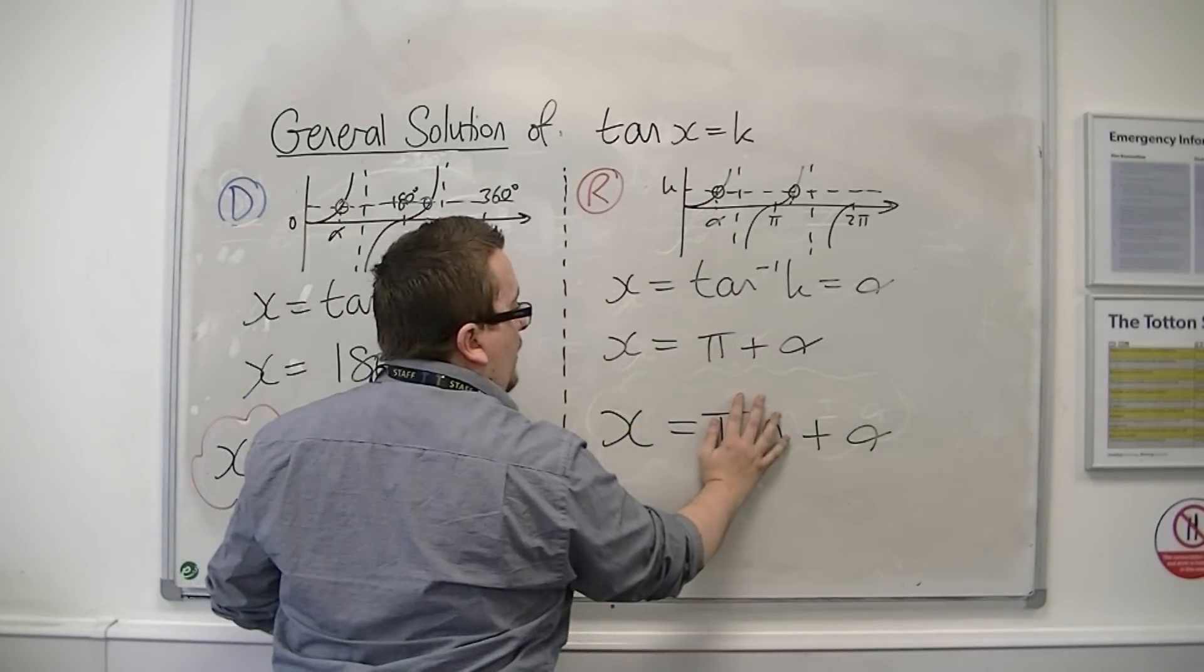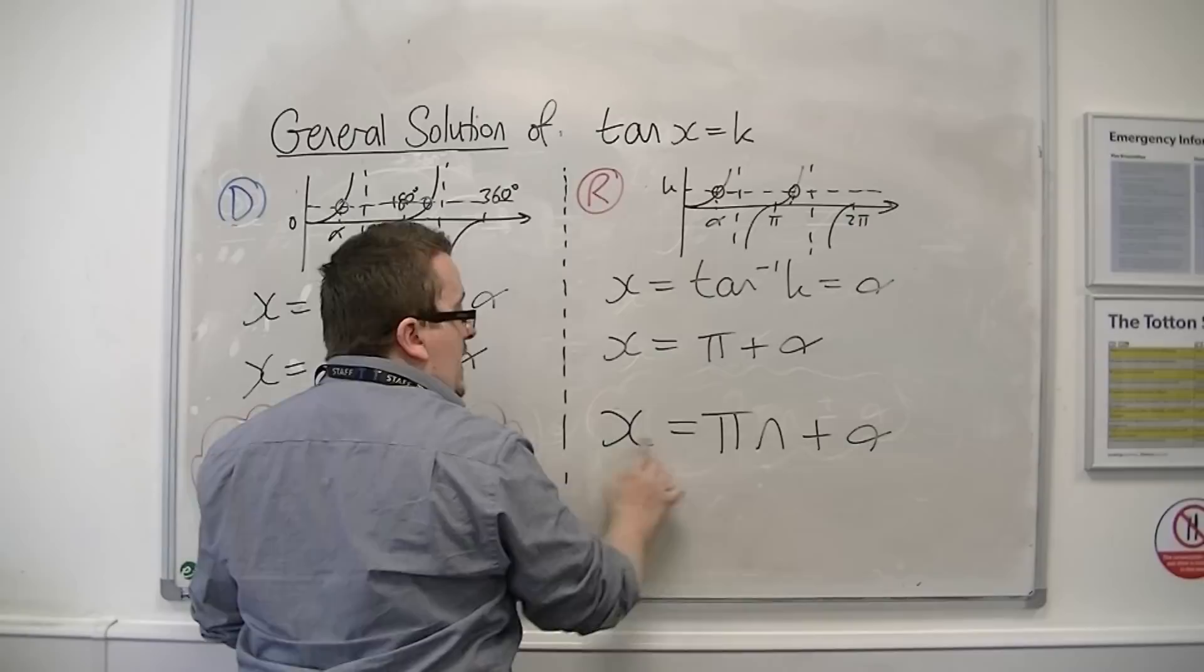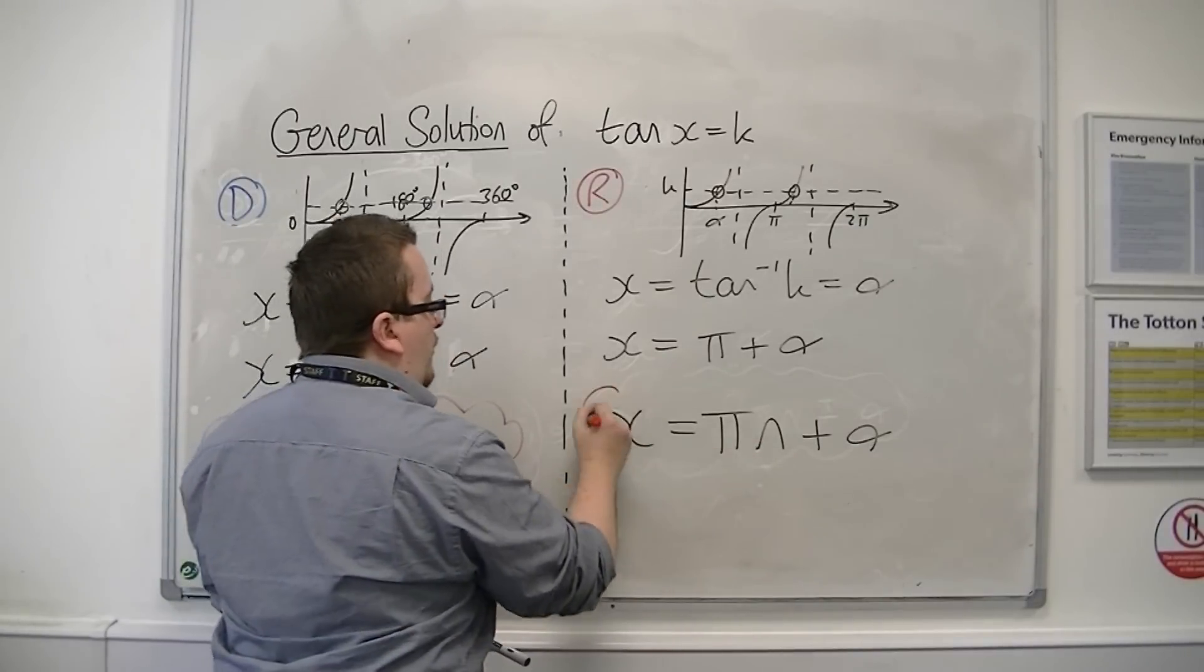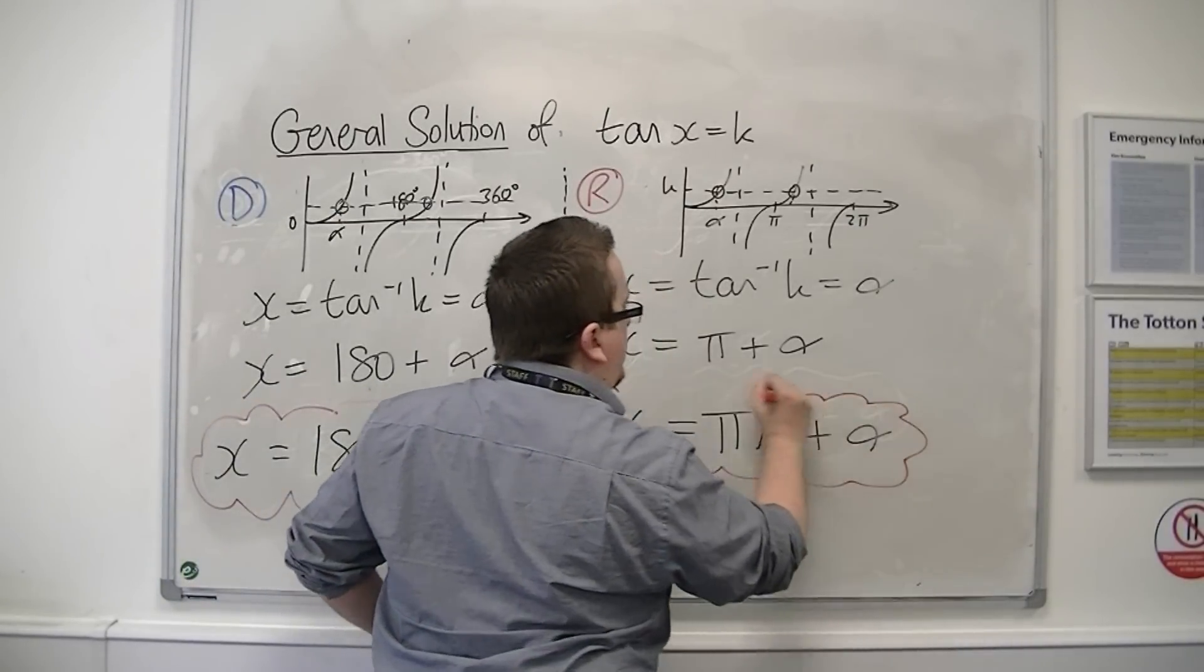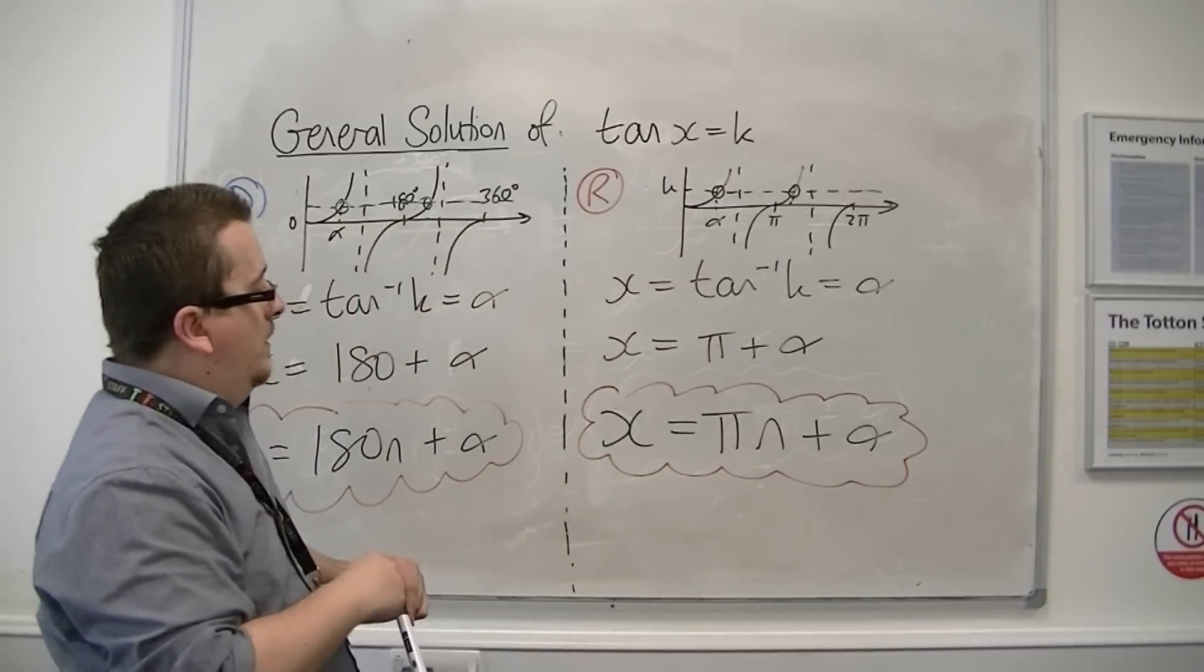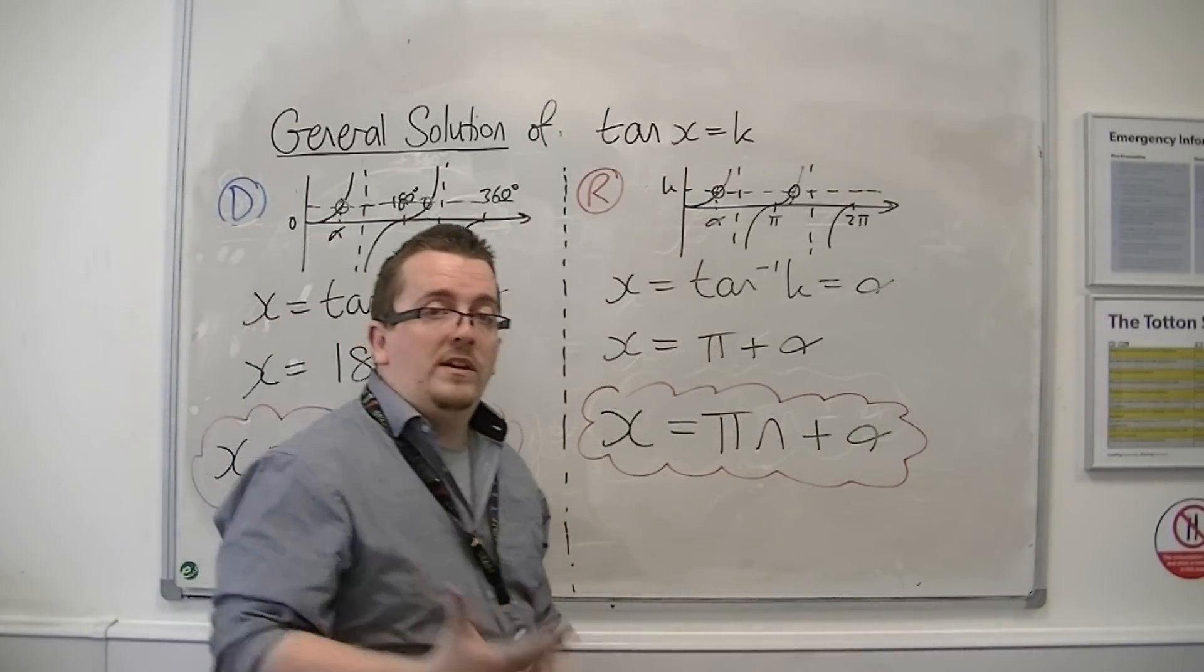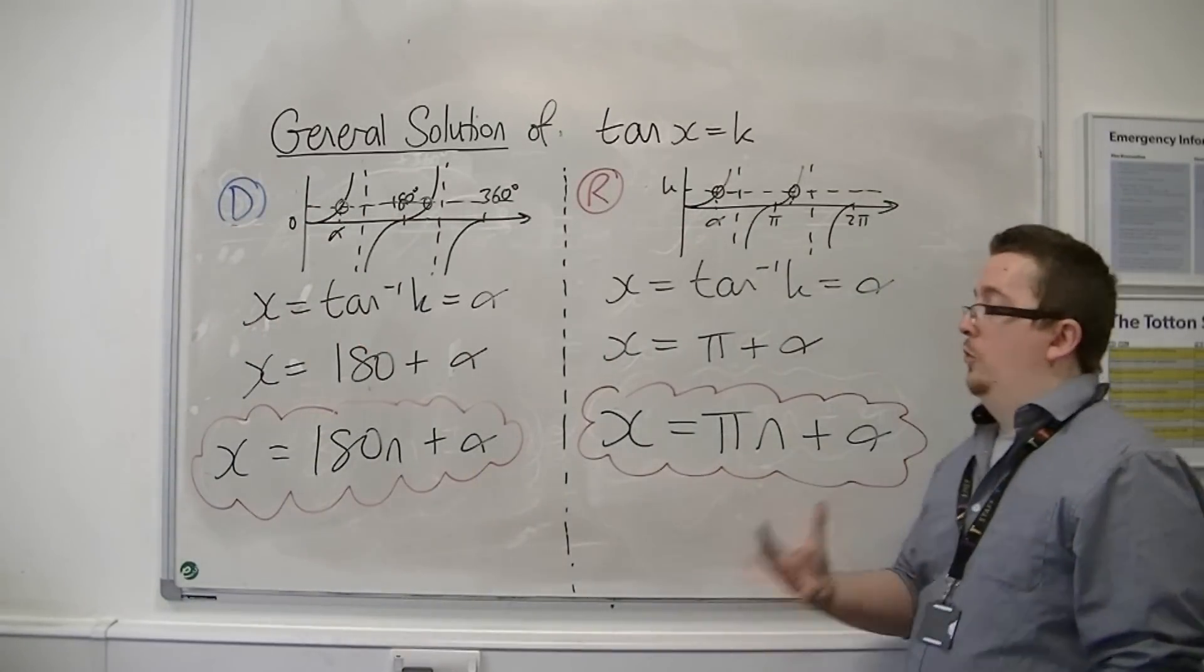And when n is 0, I get the first solution. So this generates all of the solutions that I need. And that's how we can find the general solution for tan.